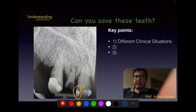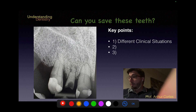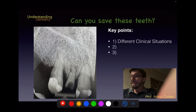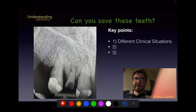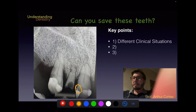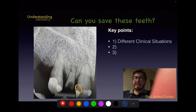On the central incisor we have two restorations: a distal restoration and a mesial restoration which is also palatal. Their adaptation is not ideal. We can see a radiolucent line, but it is not carious. There's a radiolucent image between the restoration and the dentine.